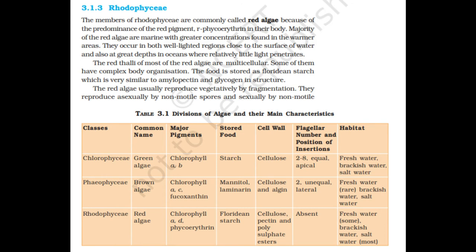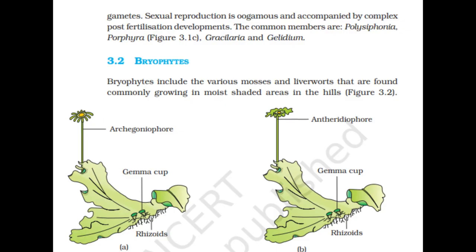The members of Rhodophyceae are commonly called red algae because of the predominance of the red pigment, r-phycoerythrin, in their body. Majority of red algae are marine with greater concentrations found in warmer areas. They occur in both well-lighted regions close to the surface of water and also at great depths in oceans where relatively little light penetrates. The red thalli of most red algae are multicellular, and some have complex body organization. Food is stored as floridean starch, which is very similar to amylopectin and glycogen in structure. Red algae usually reproduce vegetatively by fragmentation, asexually by non-motile spores, and sexually by non-motile gametes. Sexual reproduction is oogamous and accompanied by complex post-fertilization developments. The common members are Polysiphonia, Porphyra, Gracilaria and Gelidium.